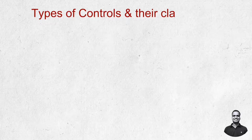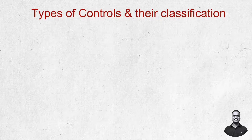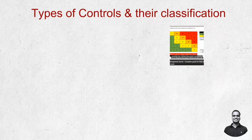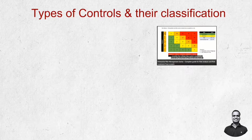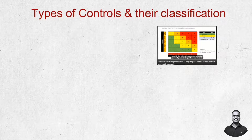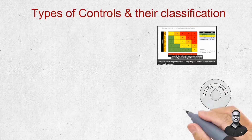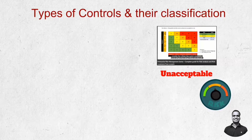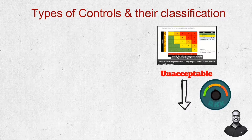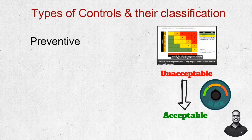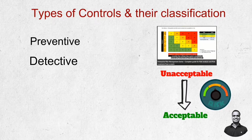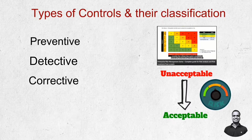Hello friends, welcome back to our new video on types of control and their classification. In our last video, we discussed that once risk is identified, organizations put some controls or countermeasures to bring risk from a high level to an acceptable level. There are three types of control: preventive, detective, and corrective. Today we will discuss what these controls are, their importance, and how they can be implemented to protect against various security threats.